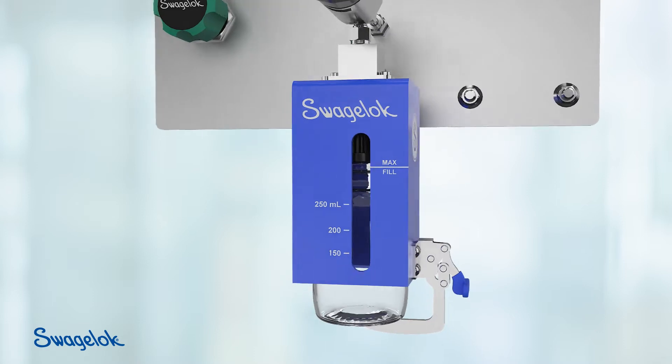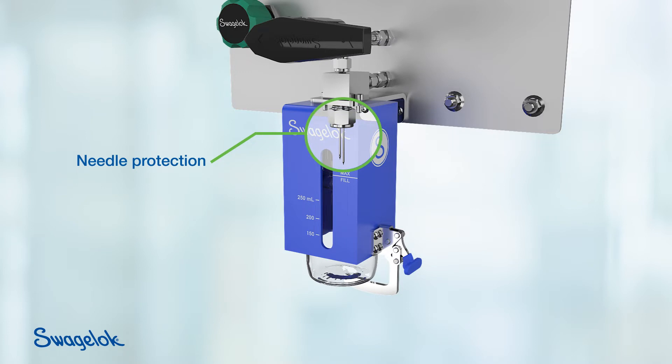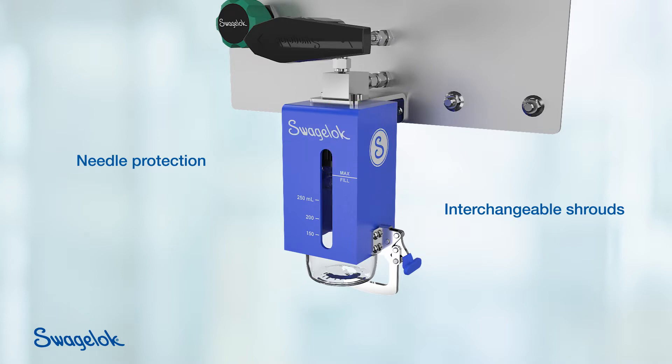Bent needles are the number one maintenance issue on sampling valves. The shroud protects the needles and prevents them from being an exposed hazard to the operator. Shrouds are interchangeable and can be made in a variety of sizes to fit the sample bottles.